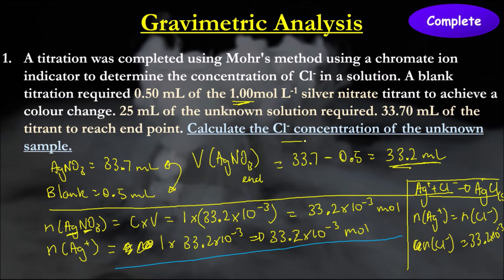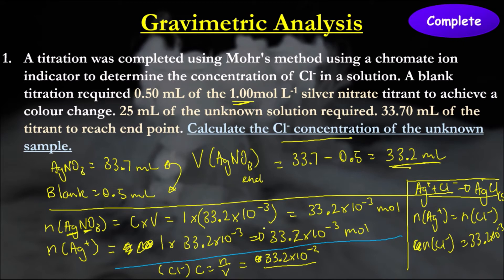The last thing we want is the concentration of chloride in the solution. Using C = n/V, the number of moles of chloride is 33.2 × 10⁻³ mol (from 33.2 mL at 0.032 mol/L), and the volume used in the titration was 25 mL, so 25 × 10⁻³ L. Plugging that into the calculator, we get a concentration of approximately 1.33 mol/L.